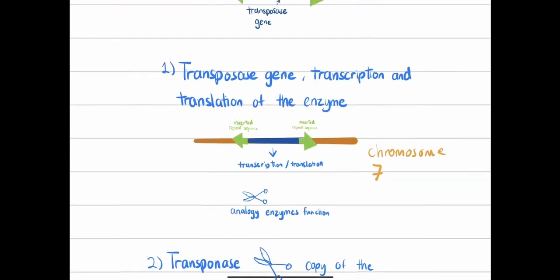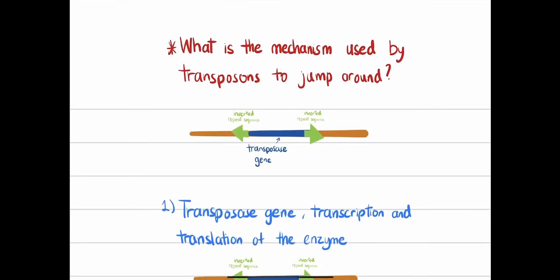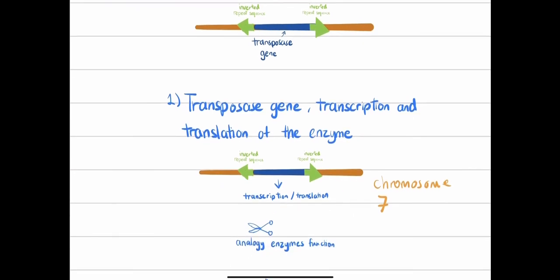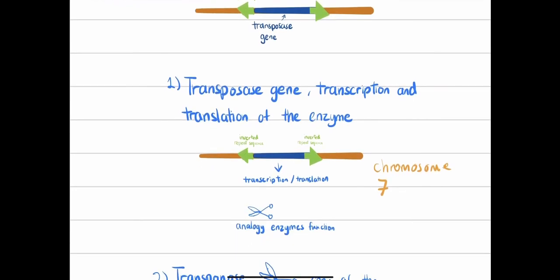Now let's talk about the overall mechanism of how transposons jump around. The first thing that happens is transcription and translation of the transposase gene. The transposase gene helps produce the transposase enzyme, and the transposase will cut off the transposon from its current location.